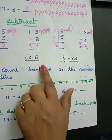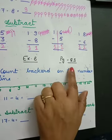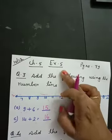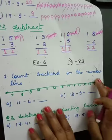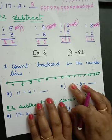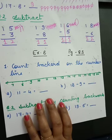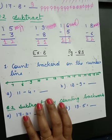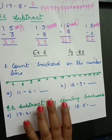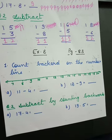Now look — Exercise 8. Page number 83 is similar to Exercise 5. There it was addition, and here it is subtraction. In addition we go forward steps; in subtraction we go backward. Pichhe ki taraf step — backward. Got it?